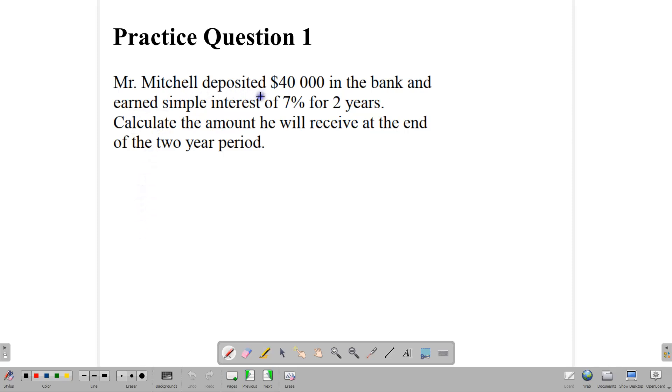So here we have Mr. Mitchell deposited $40,000 in a bank. It earned simple interest. And the question normally tells you that it's simple interest. And he earned simple interest of 7% for two years. And so we are to calculate the amount he will receive at the end of the two-year period. So let's apply the formula. The formula says the interest is equal to the principal times the rate times the time, PRT over 100 gives us the interest.